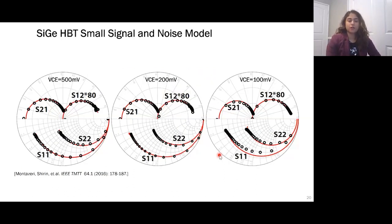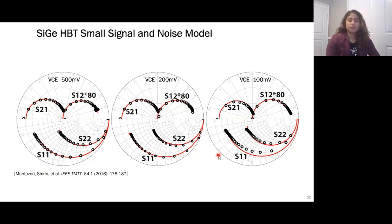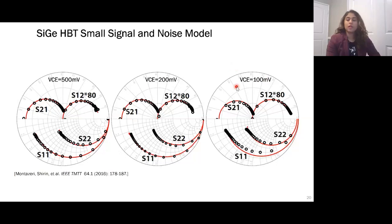This is a comparison of our model versus measurements. Based on the scattering parameter measurements, we implemented a model and compared it with measurements — showing S11, S22, S21, S12 on the Smith chart. We show the model for supply voltages of 500 mV, 200 mV, and 100 mV, and you can see the model and measured data match perfectly, confirming that our model captures the performance of these transistors at such low supply voltages.